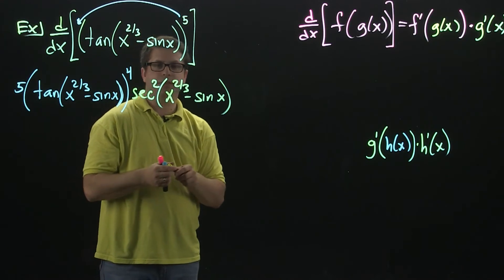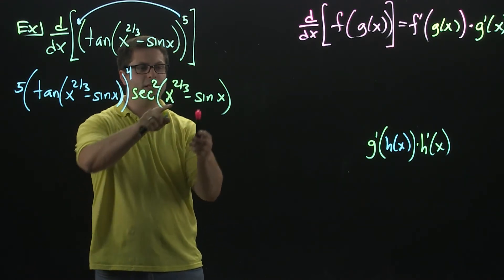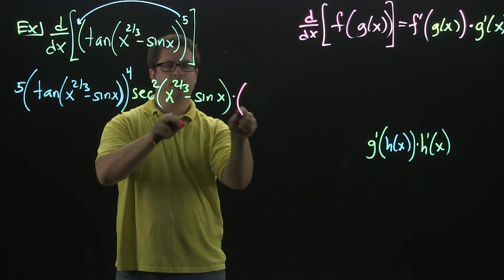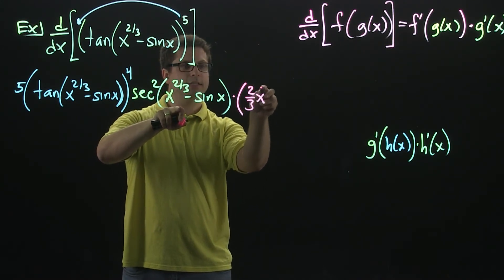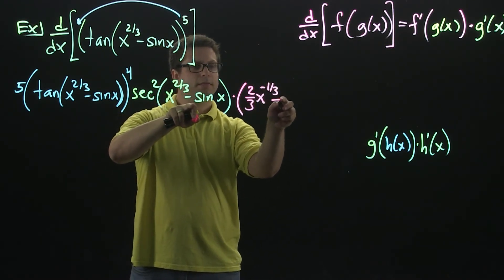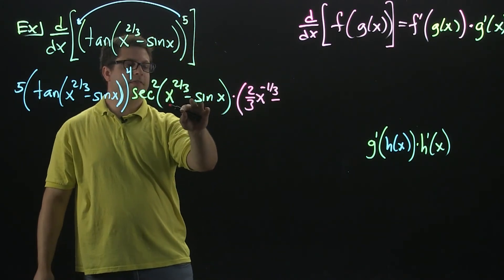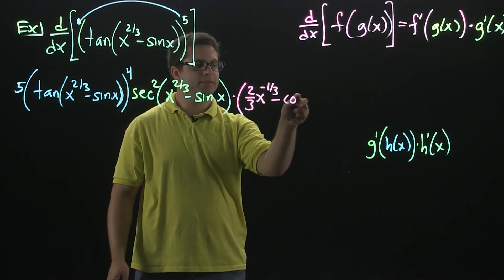And then you're going to multiply by the derivative of the inside. So the derivative of x to the two-thirds is two-thirds x to the negative one-third minus. And then the derivative of negative sine is negative cosine.